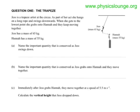Name the important quantity that is conserved as Jess swings down. Energy is the quantity. We're trying to move through this quickly so I won't dwell on these things, but gravitational potential energy is converted to kinetic energy.